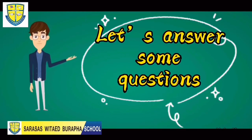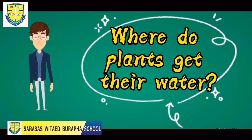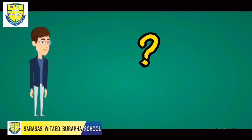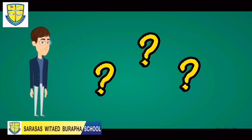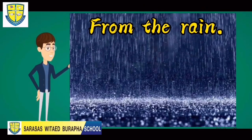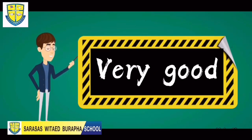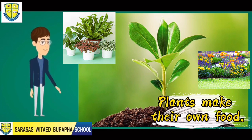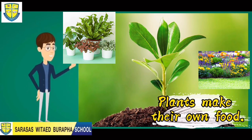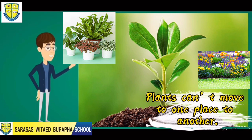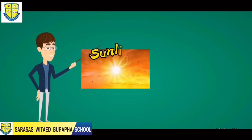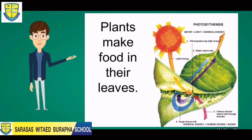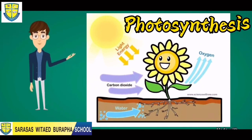Where do plants get their water from? The answer is from the rain — very good! Where do plants find their food? Plants make their own food. Unlike other living things, plants cannot move from one place to another. Plants use sunlight, air, and water to make their own food in their leaves. This process is called photosynthesis.